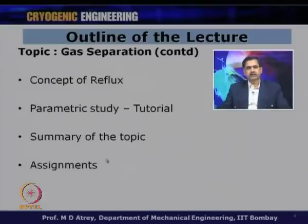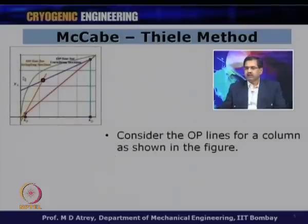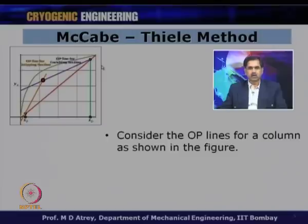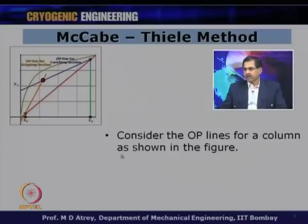There is an assignment for you which I expect all of you to solve by yourself and compare with the solutions provided. In our graphical methodology, we have an operating line for the enriching section, an operating line for the stripping section, and an equilibrium line. We have a purity at the top given by XD of the low boiling component and an impurity at the bottom given as XB. We also have the diagonal line representing y equals x.